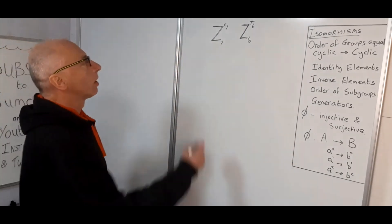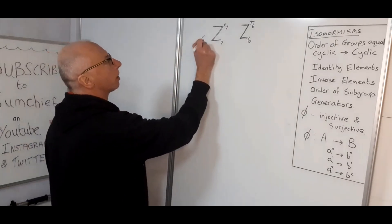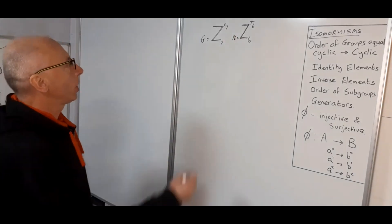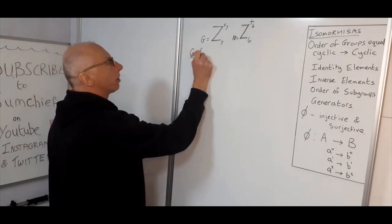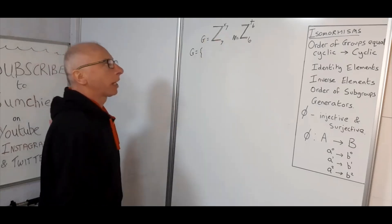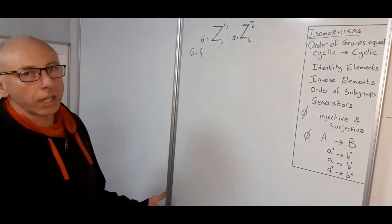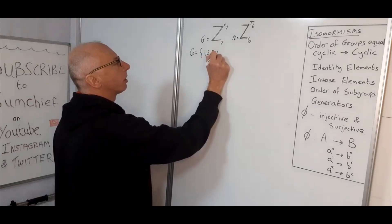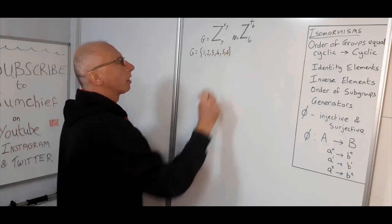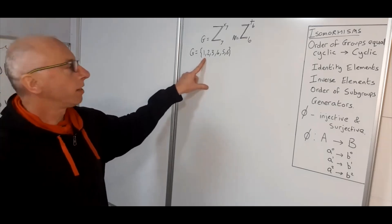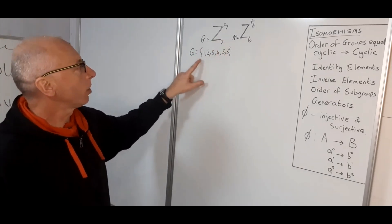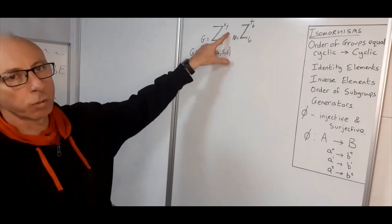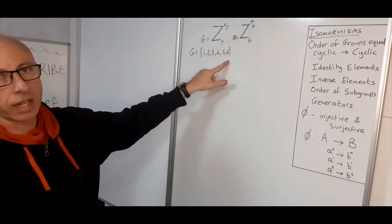Let's define the groups. Group G is the integers up to seven under multiplication modulo seven. So we have the integers one, two, three, four, five, six. One is the identity element under multiplication. Because it's mod seven it only goes up to six, and zero does not exist in a multiplication modulus group. So those are the six elements of group G.